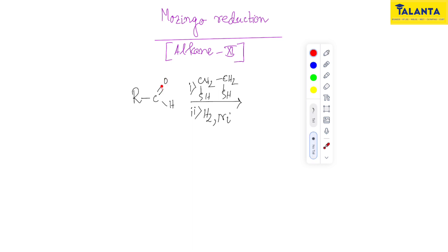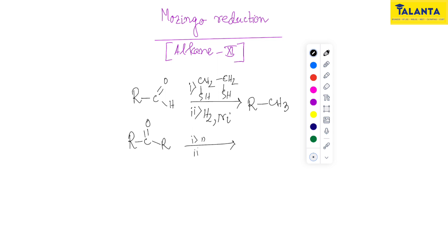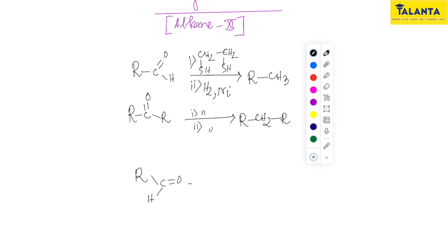In this reaction, the carbonyl group is replaced by H, giving CH₂. For an aldehyde, the product is RCH₃. Similarly, for a ketone, the carbonyl is reduced to give RCH₂R.